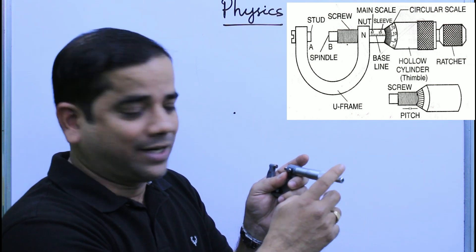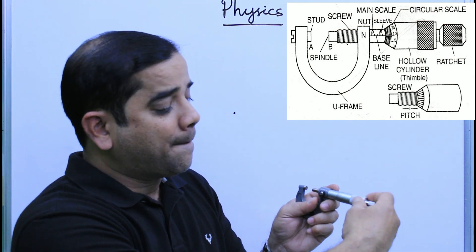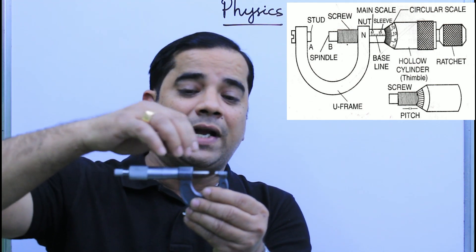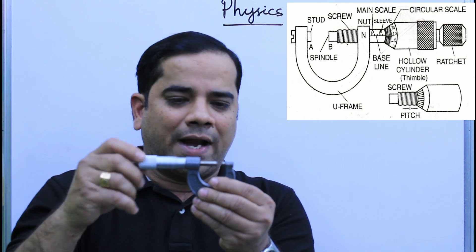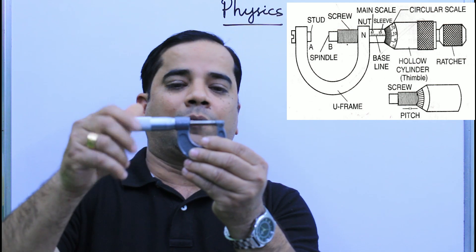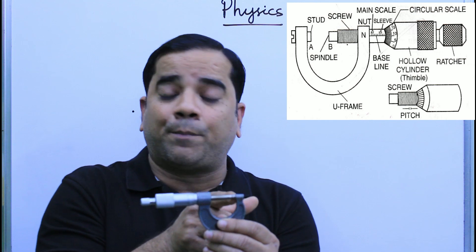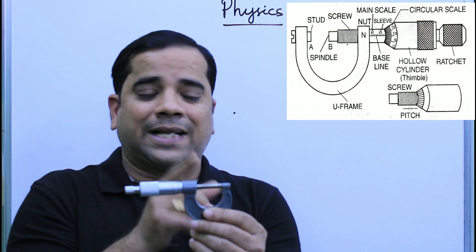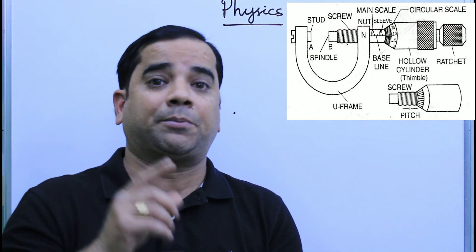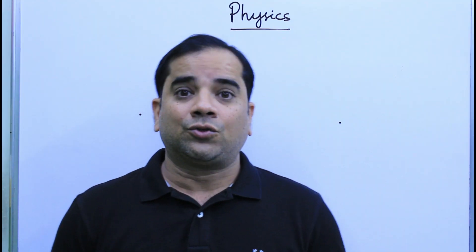The part of the screw gauge used for rotation is called the ratchet. The base line is fixed, and when we rotate the hollow cylinder it goes around the base line. We place the object between the two flat ends. After complete rotation, there is no gap between the flat ends, so we can place a wire between them, tighten it, and follow the principle of the screw to measure the diameter of the wire.